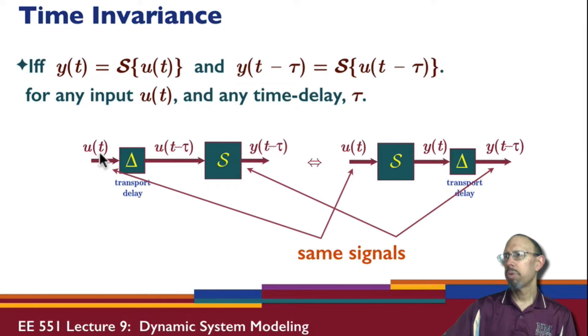So here we have an input getting delayed and then going into our system, we get an output. If we take that same input, operate first on the system to get an output, and then we delay that signal, if we get the same...